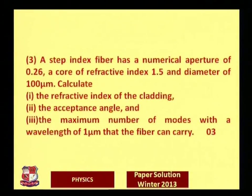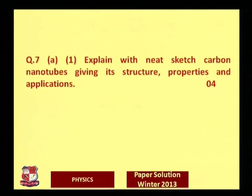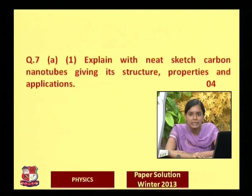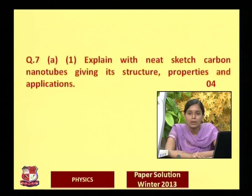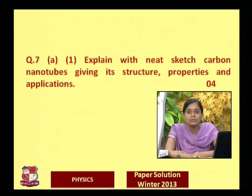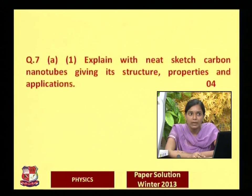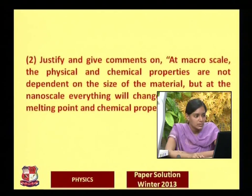The next question asks to explain carbon nanotubes with a neat sketch, giving their structure, properties, and applications — carrying four marks. Carbon nanotubes are made up of nanomaterials. One should explain the structure with a clear diagram, write down properties including the carbon arrangement, and list two or more applications.